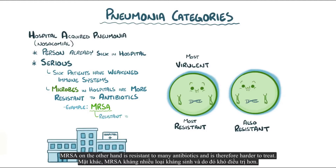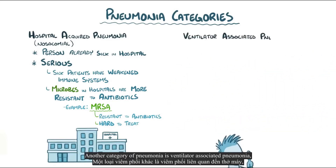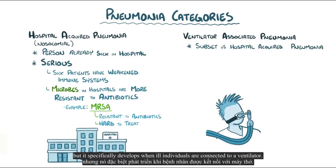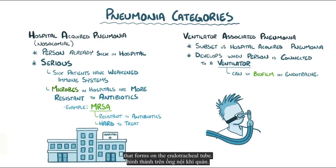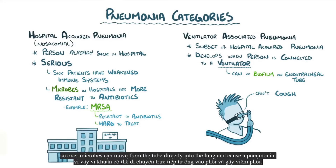MRSA, on the other hand, is resistant to many antibiotics and is therefore harder to treat. Another category is ventilator-associated pneumonia, a subset of hospital-acquired pneumonia that specifically develops when ill individuals are connected to a ventilator. Oftentimes there's a biofilm — a mix of bacteria, sugars, and proteins that can coat a surface — that forms on the endotracheal tube. Individuals on a ventilator can't cough and are often pretty sick already, so over time microbes can move from the tube directly into the lung and cause pneumonia.